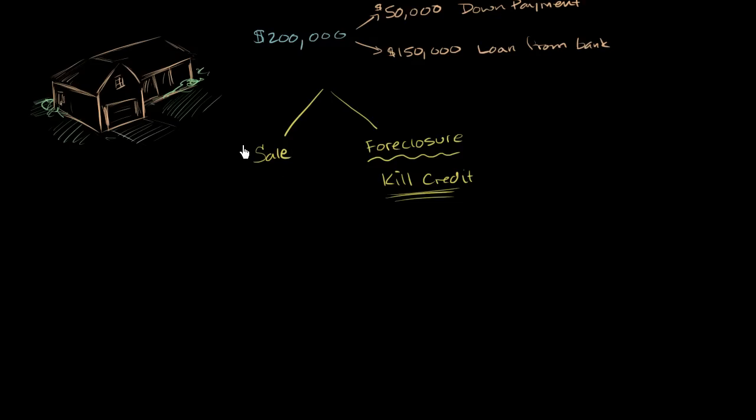So you say, okay, I want to do the sale option. Now unfortunately for you, the housing market has deflated dramatically. And so when you talk to a realtor, the realtor figures out, well look, after all is said and done, you try to sell it for more than your loan amount, but you're not able to. You're getting really low offers. The offers are like $120,000, $130,000.